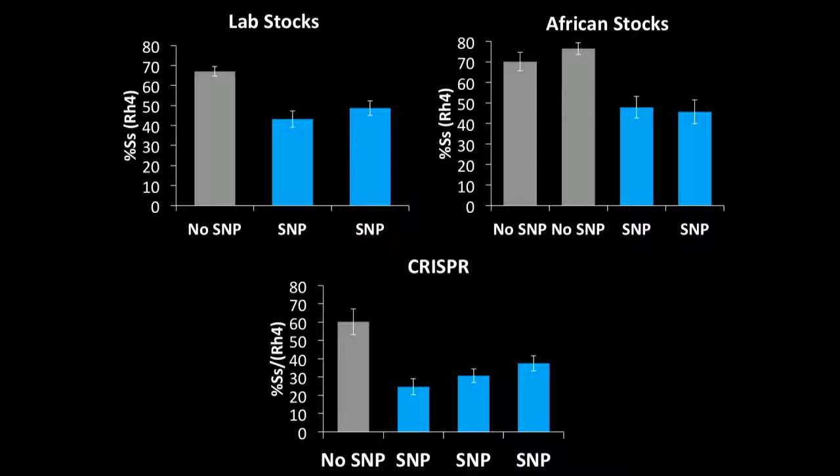Finally, to really put the nail in the coffin, we used CRISPR to insert the SNP into a wild-type line. In three independent isolates, we saw a significant decrease in the spineless expression frequency.